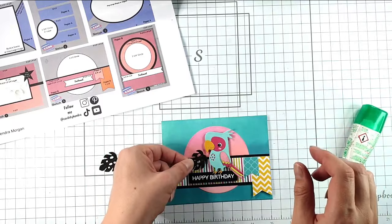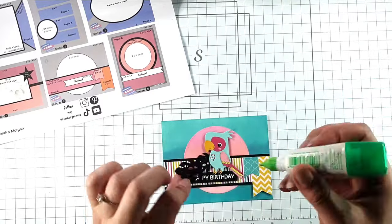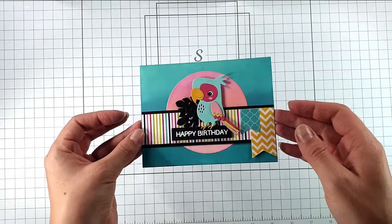And I'll pop some foam pads behind my parrot. Then I think I'll add on these little leaves as well. These are from the same dice set as the parrot. And then there's our cute little card finished.